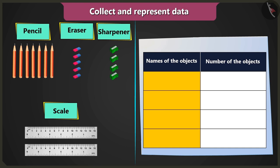Now write which objects are there in the column names of the objects. In the column names of the objects, I wrote pencil, eraser, sharpener, and scale.